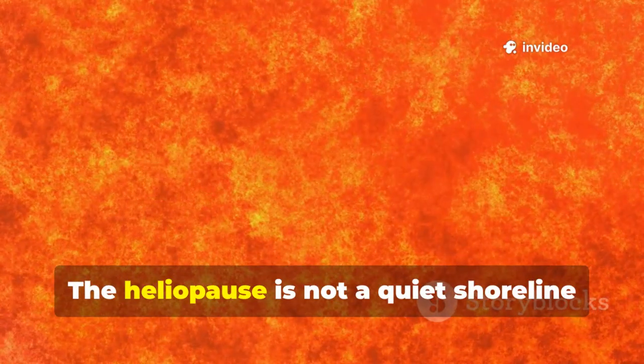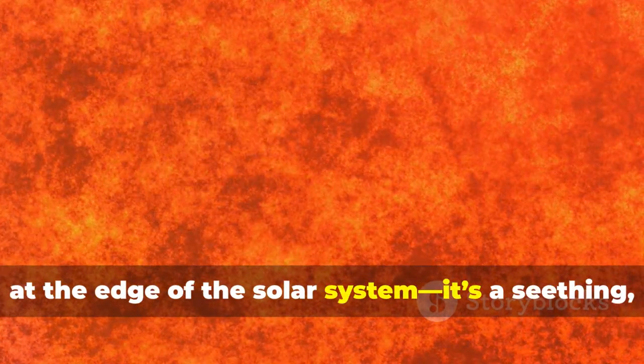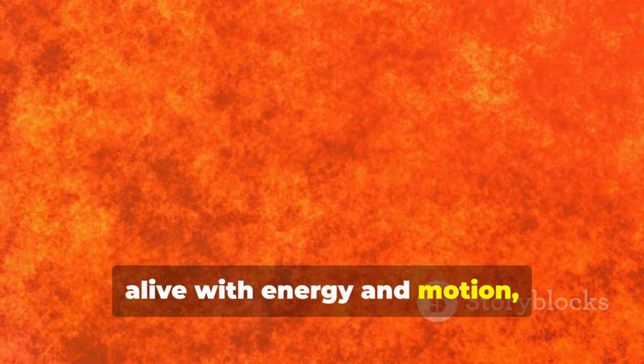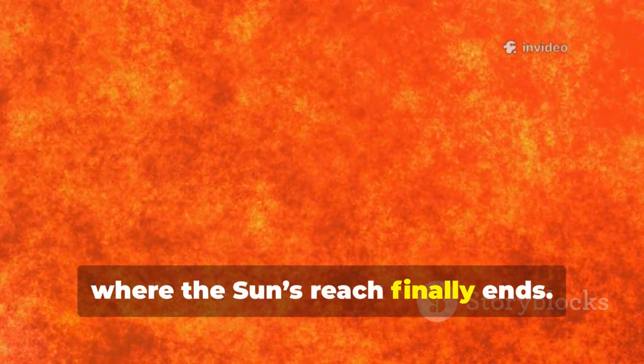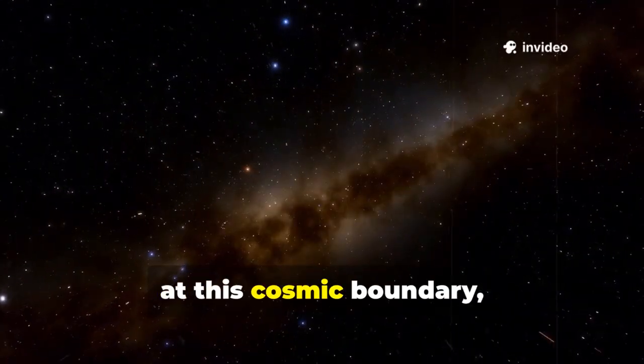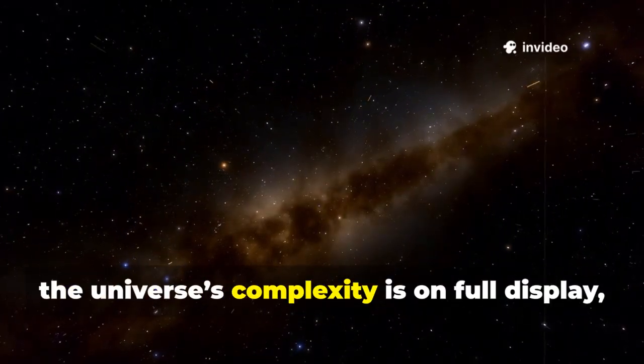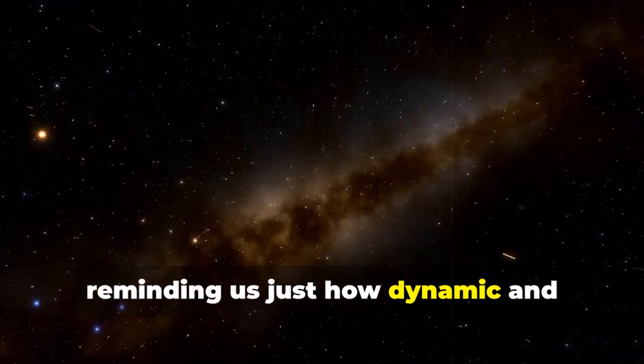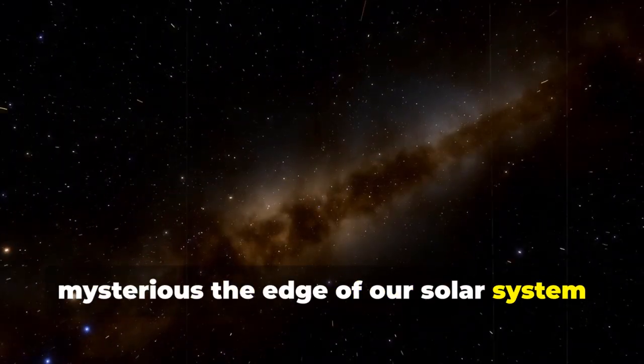The heliopause is not a quiet shoreline at the edge of the solar system. It's a seething, active zone, alive with energy and motion, where the sun's reach finally ends. Here, at this cosmic boundary, the universe's complexity is on full display, reminding us just how dynamic and mysterious the edge of our solar system truly is.